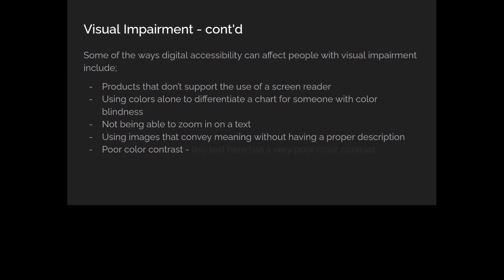Second is using colors alone to differentiate charts. If you have an analytics platform with bar charts or pie charts using green for good and red for bad, people with red-green color blindness won't be able to see the difference. One way to fix that is to use patterns — so a green chart might have a stripe pattern while another has no pattern. That way, even if you can't distinguish the colors, you can still see the patterns and know the charts are different.